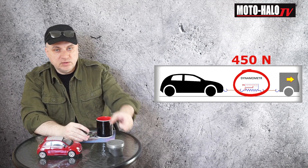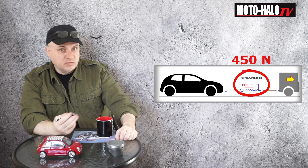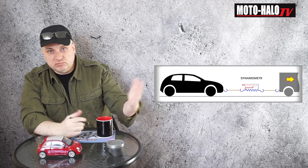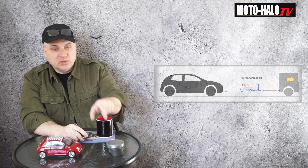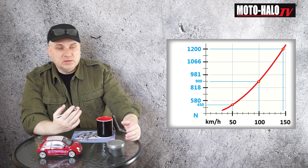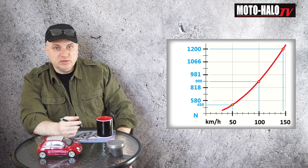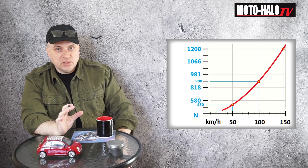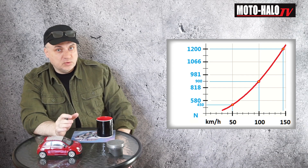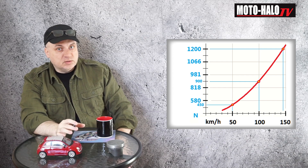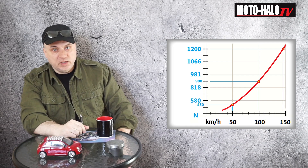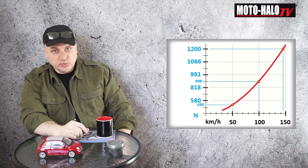By measuring that force at every given speed — starting from 5 kilometers an hour, then 10, 15, 25, up to 150 kilometers an hour — we can note that force, and this is what we see on the diagram. This is how we can imagine this diagram being created. These diagrams are made for every single type of vehicle. This particular one was borrowed from a PhD dissertation and was created for a passenger light vehicle — something similar to a Fiat Punto from the 1990s.